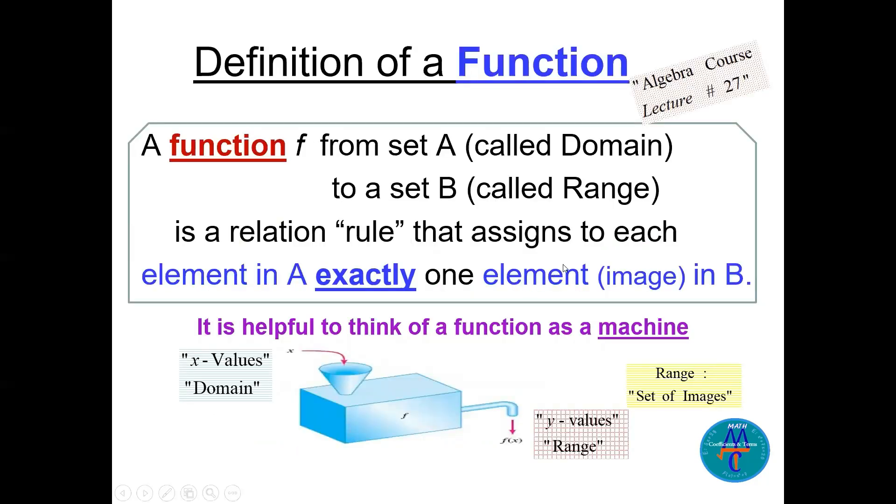Now definition of a function we have seen in the algebra course lecture 27. If you need to review, a function from set A to set B is a relation that assigns to each element in A exactly one element image in B. So we can think of a function as a machine. We have the x values the input which we call them the domain and the y values are the output or we call them the range.